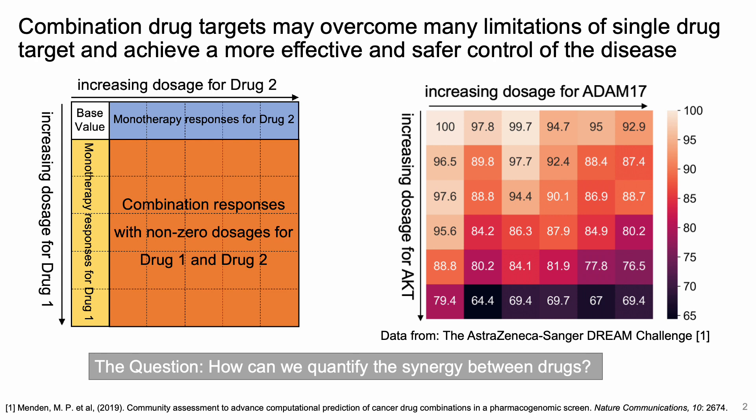Here is a figure that shows what these dose-response matrices look like. We have increasing dosages of drug 1 on one axis and increasing dosages of drug 2 on the other axis. The numbers here represent the percentage of a certain cancer cell line that is still alive after applying the drug and waiting for a predefined number of days. The base value represents the plate with no drug and is therefore normalized to 100. Given such a matrix, the next thing to do is to quantify the synergy of the combination.